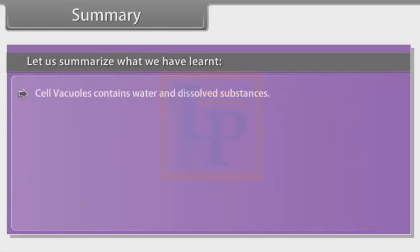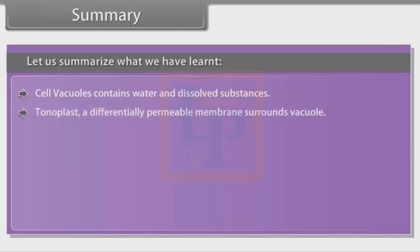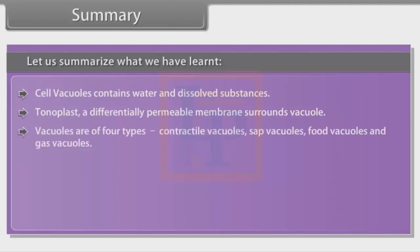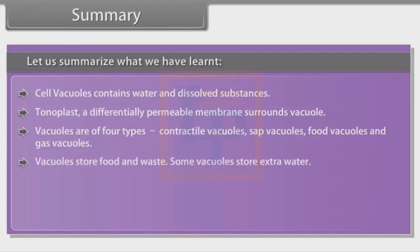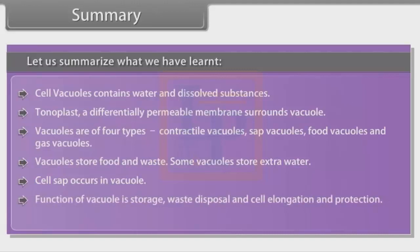Cell vacuoles contain water and dissolved substances. Tonoplast, a differentially permeable membrane, surrounds the vacuole. Vacuoles are of four types: contractile vacuoles, sap vacuoles, food vacuoles and gas vacuoles. Vacuoles store food and waste. Some vacuoles store extra water. Cell sap occurs in the vacuole. The function of the vacuole includes storage, waste disposal, cell elongation and protection.